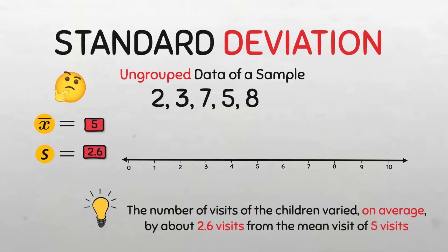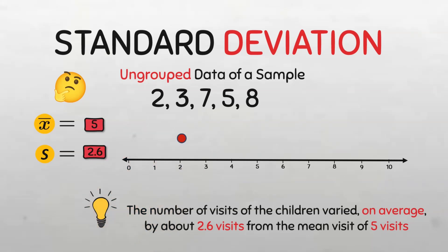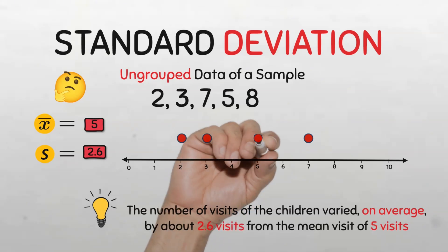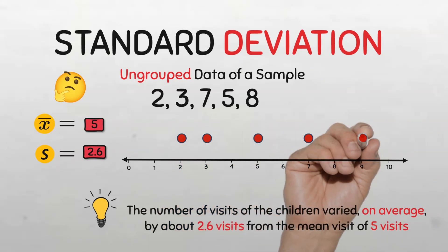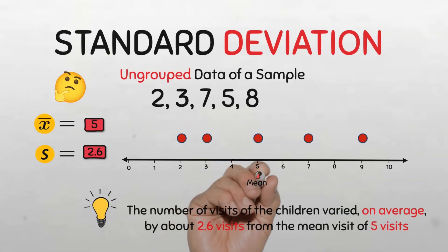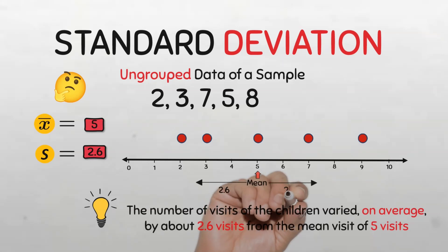Let me explain this further using a number line to show the dispersion of the data. The standard deviation is a measure of spread. The first child had two visits, the second had three, the third had seven, the fourth had five, and the last had eight — remember the one with the bike. A mean of five indicates that the central value of our data is five, and we can see the majority of the data values clustering around five. The standard deviation of 2.6 visits means that on average the data varied by 2.6 visits above and below the mean.